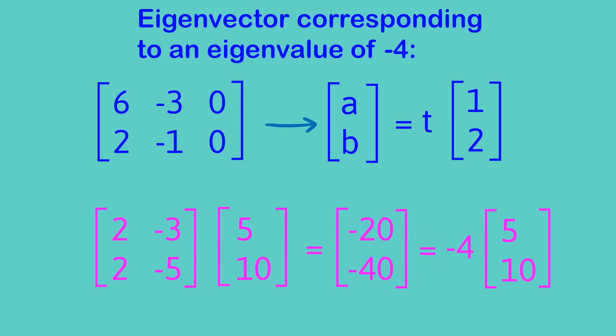You can see here that I've just picked a random multiple of the vector [1,2] and when I apply the matrix to it you would expect that I'll get some multiple of the vector that I chose and that's what we get.